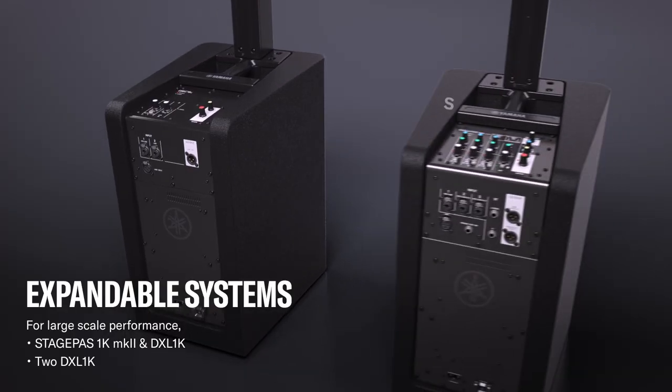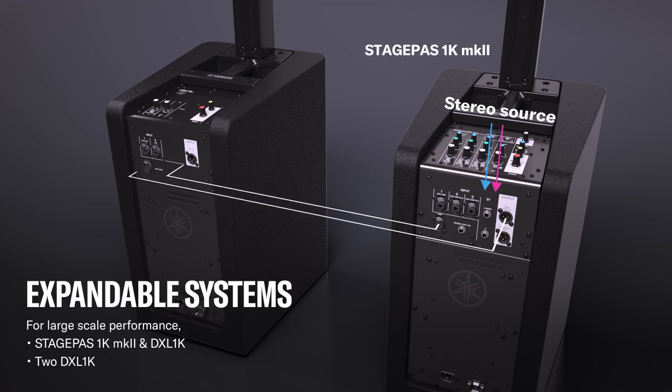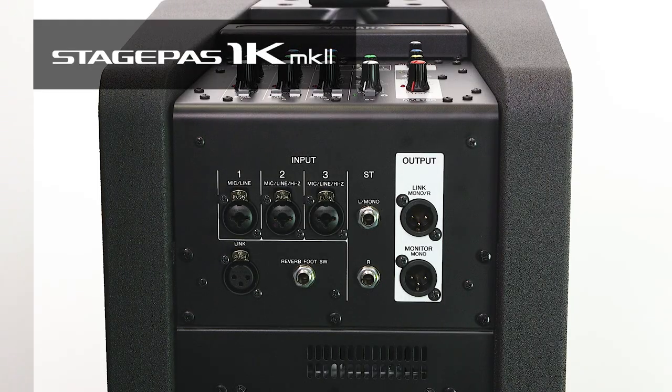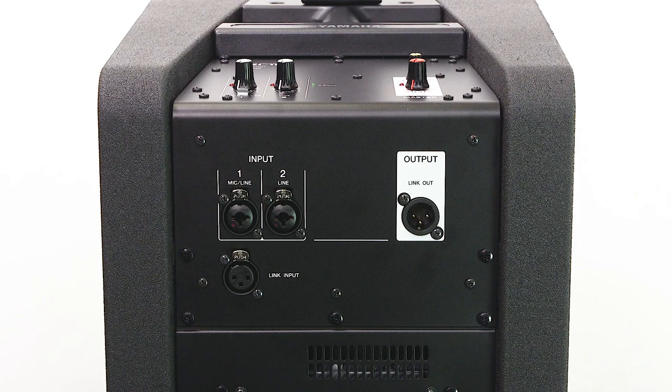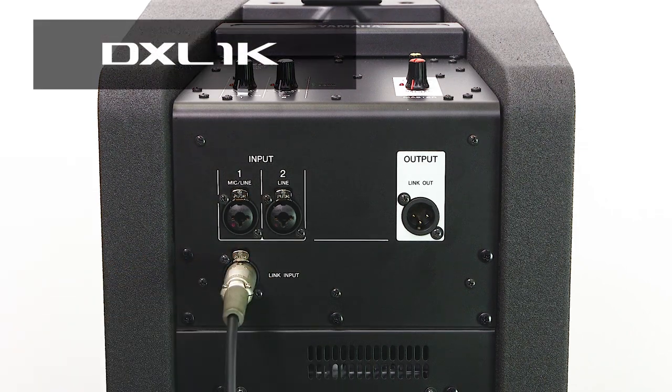For example, linking the StagePass 1K Mark II and DXL-1K in stereo allows musicians to pan instruments to the left or right speaker or play movies in stereo, or change the StagePass link out to mono mode to send a matching signal for presentations or speeches.